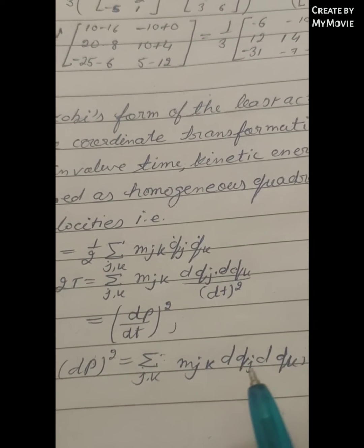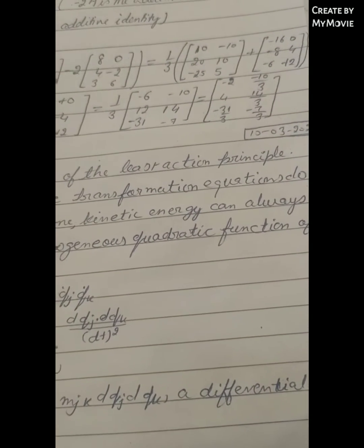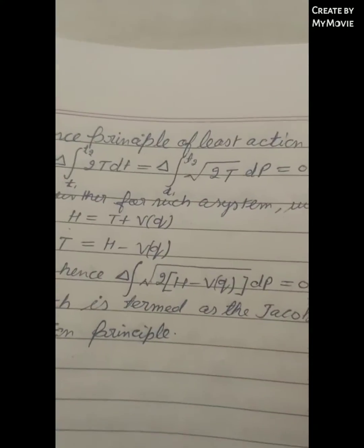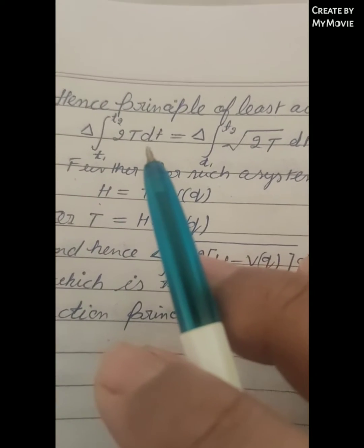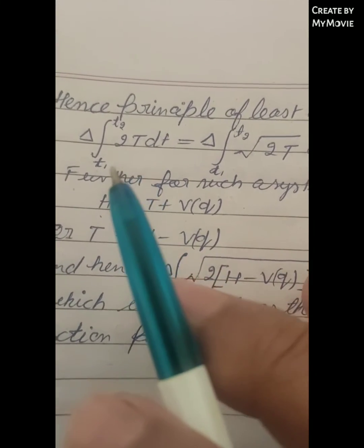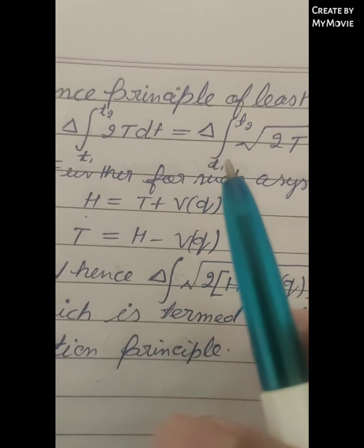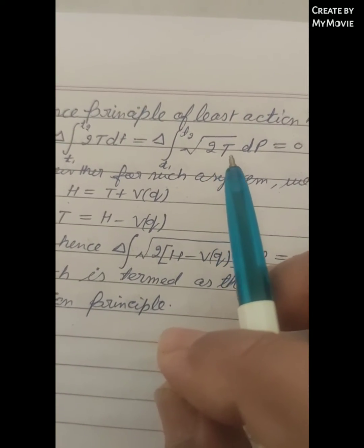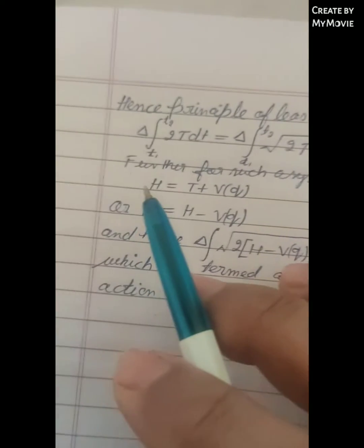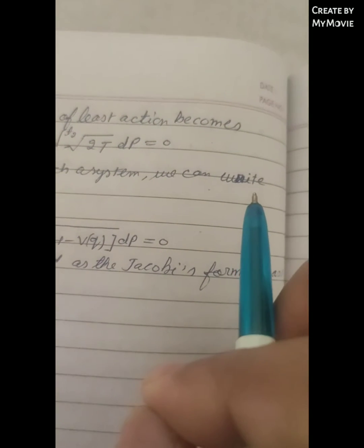Or a differential. Hence, the principle of least action becomes delta integral from t1 to t2 of 2T dt equals delta integral from t1 to t2 of square root of 2T d rho equals 0. Further, for such a system we can write